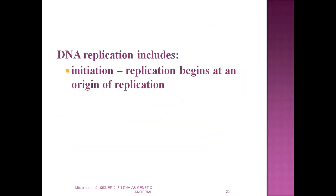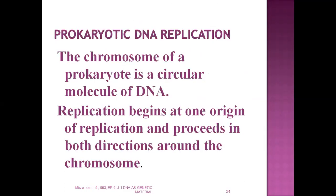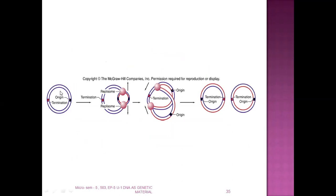DNA replication includes three different steps: initiation, elongation, and termination. Replication begins at the site called the origin. In prokaryotic DNA replication, the DNA is a circular molecule and replication begins at the origin. As shown in the figure, replication proceeds from the origin in a circular manner until both circles are separated.